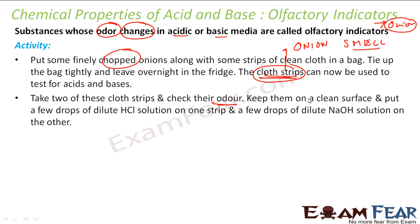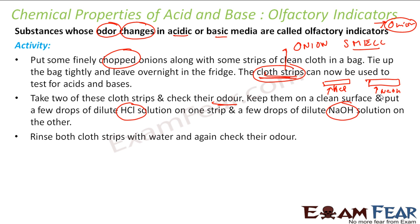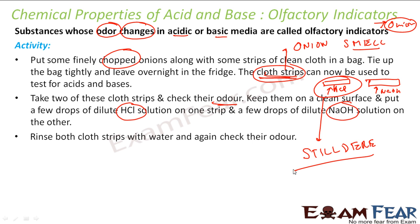The strip has onion smell. Now we will take two strips and put HCl on one and NaOH on the other. Using the dropper we get in chemistry labs, we put these chemicals on the strips. We will then put this in the sun for some time or wash with water and check the smell. You will observe that the strip with HCl is still smelling, while the one with the base has no smell — the smell goes off.